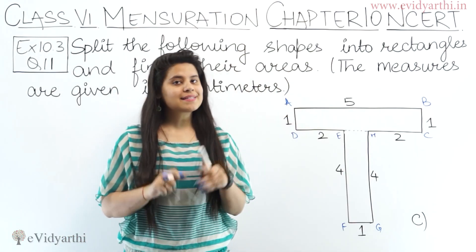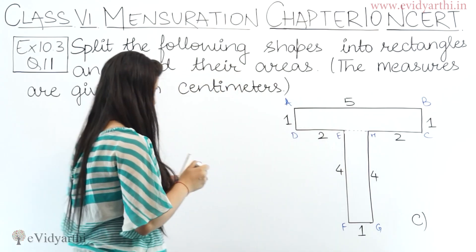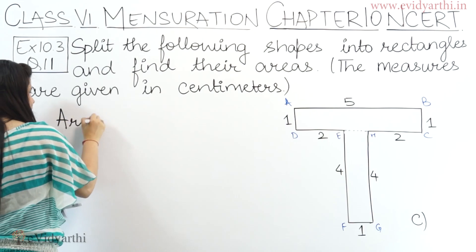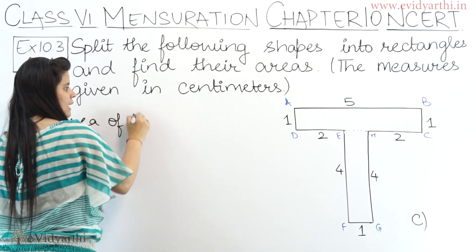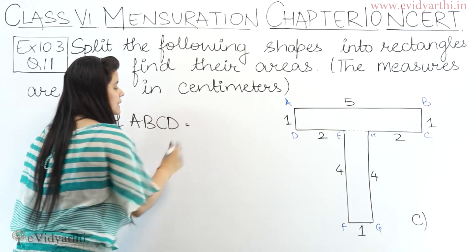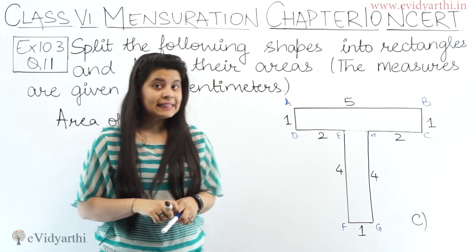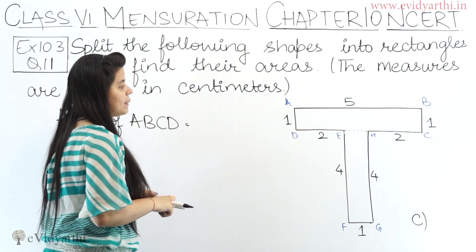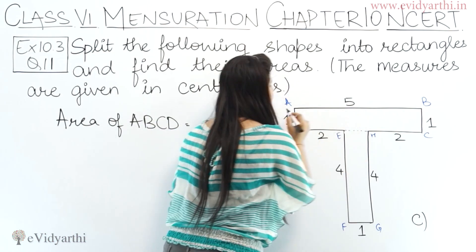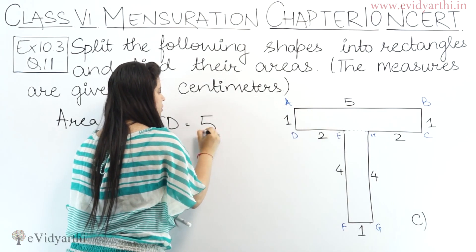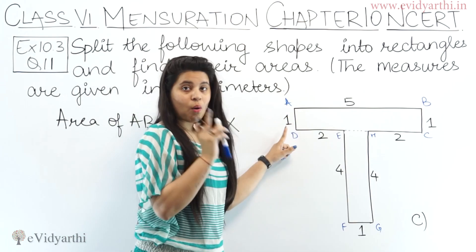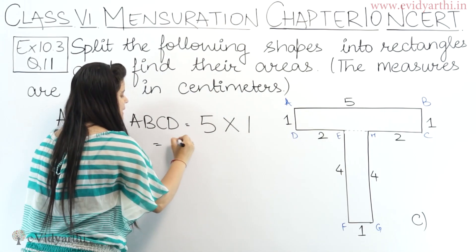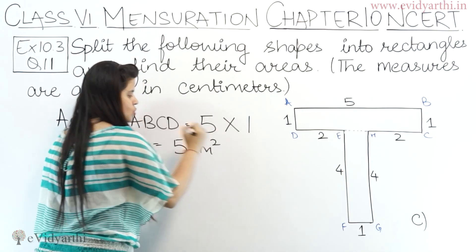We have two rectangles and now we will find the area of these rectangles. Area of rectangle ABCD = length into breadth, because it is a rectangle. The length AB is given as 5 cm and breadth is 1 cm. So 5 into 1 = 5 centimetre square.